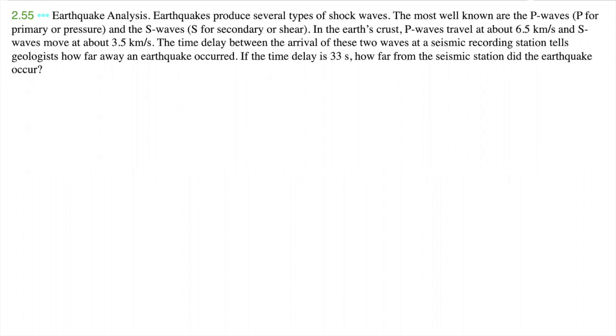Earthquake analysis. Earthquakes produce several types of shock waves. The most well known are P waves, P for primary or pressure, and S waves, S for secondary or shear. In the Earth's crust, P waves travel at about 6.5 kilometers per second and S waves move at about 3.5 kilometers per second.